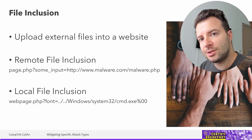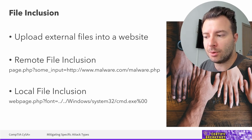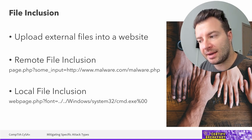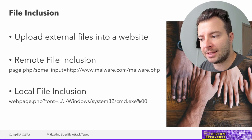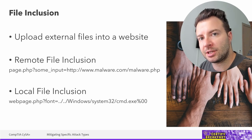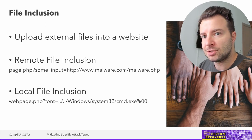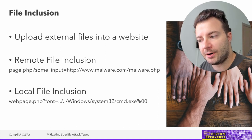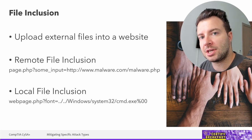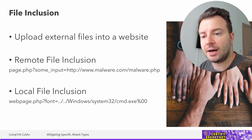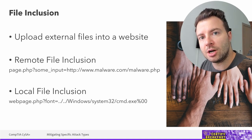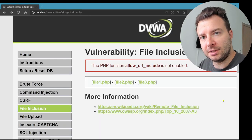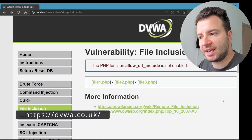An example would be an application designed to load a font file from the same folder as the rest of the code. We can trick it into loading the shell of the operating system the server is running on. The percent-zero-zero at the end is the null character in hexadecimal, which we add to bypass simple rewriting mechanisms that automatically append a .php or .html extension to any accessed file — giving an attacker access to any kind of file, including non-PHP or non-HTML files.